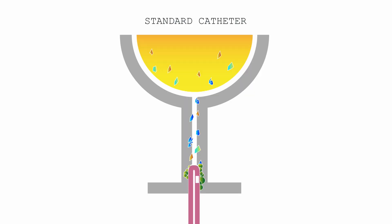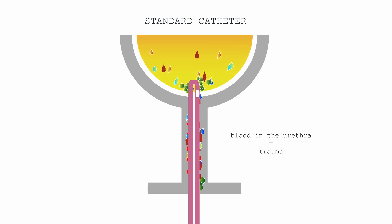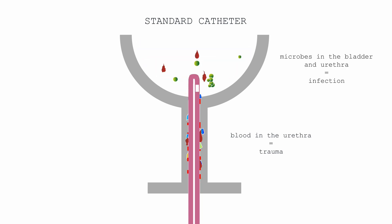The standard catheter slides in and pushes the crystals of oxalates and urates inside the urethra, which then cause small cuts in the lining of the urethra. Also, the microbes are stuck on the catheter's front surface, so they are transported deep into the bladder.